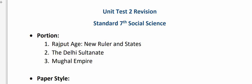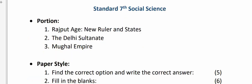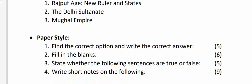Students, this is the revision video for your second unit test. The portion plan for social science is Chapter 1: Rajput Age - New Rulers and States, Chapter 2: The Delhi Sultanate, and Chapter 3: Mughal Empire. Now let's have a look at the paper style.